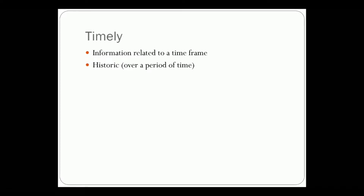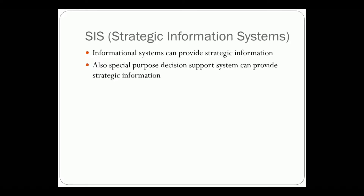These are the characteristics of Strategic Information. Now let's see Strategic Information Systems. In order to handle Strategic Information, there is a requirement of computer systems or information systems. These systems are the Strategic Information Systems, also abbreviated as SIS.